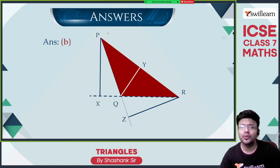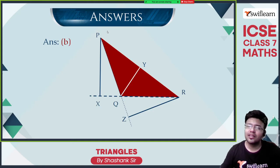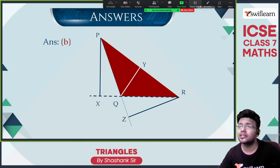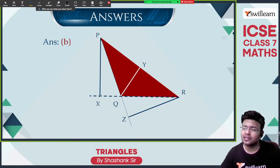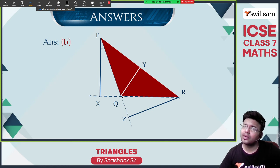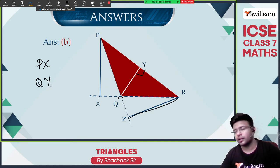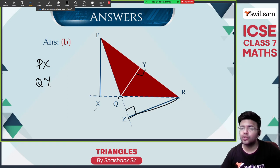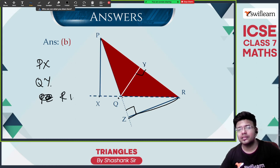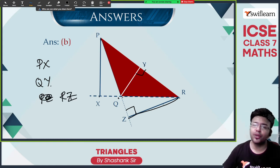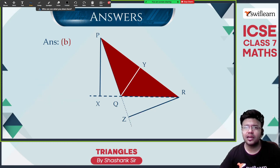Draw the altitudes for the obtuse angled triangle. PQR is an obtuse angled triangle. PX is the altitude which is perpendicular to the base QR and joins vertex P. QY is also an altitude. RZ is also an altitude — it is perpendicular to the line it meets. So RZ is also an altitude. These 3 are the answers.